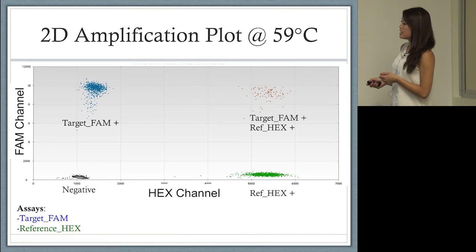The same goes for targets amplifying in the HEX channel. Then you have your double positive amplicons amplifying over here. We know our assays are well optimized because our clusters are very discrete clusters.